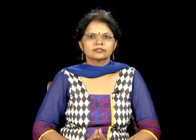Next is trends in female sterilization. Female sterilization is the primary method of family planning in all the EAG states, including India and other non-EAG states. Table 5 on your screen shows that three-quarters of the users of modern contraceptives in India have adopted female sterilization, with a little more than 1% using male sterilization, according to the 2007–08 DLHS-3.